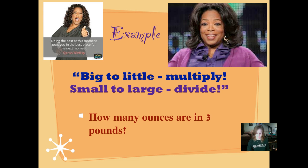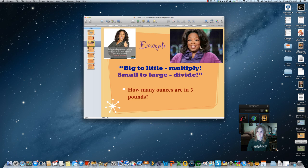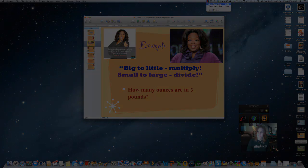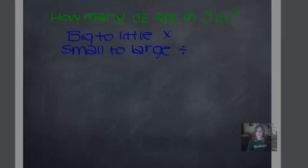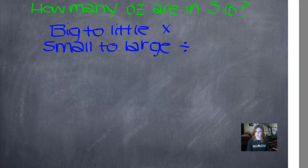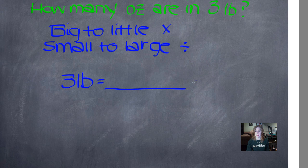That's going to drive you and your parents crazy — it's going to be stuck in your head all night. Let me show you how we're going to do that. So just like with all of our customary units of measurement when we're converting them, we write down what we know first. So in this sentence, how many ounces are in 3 pounds? We know how many pounds we have — we have 3 pounds — and we're going to write that down. Equals, and we're going to draw our line and put the abbreviation for ounces.